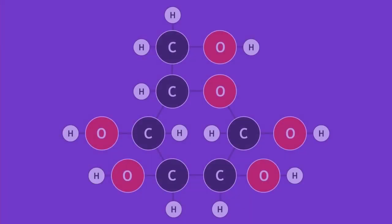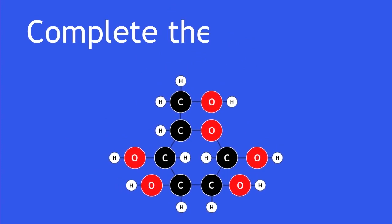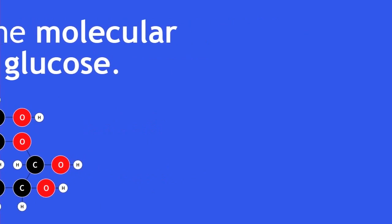This is the molecule glucose. Pause the video now, and complete the molecular formula for glucose. You should have counted 6 carbon atoms, 12 hydrogen, and 6 oxygen atoms, so the molecular formula is C6H12O6.